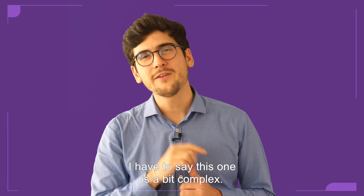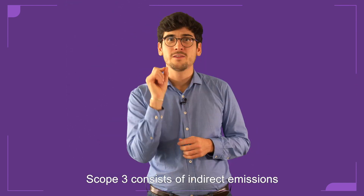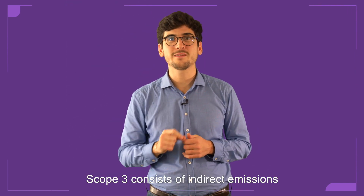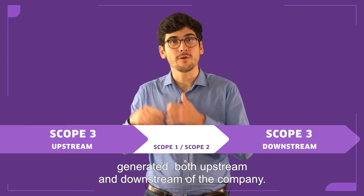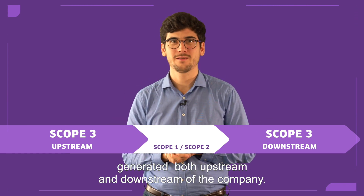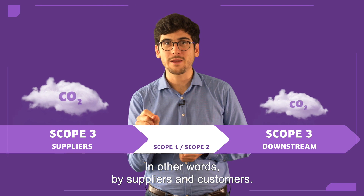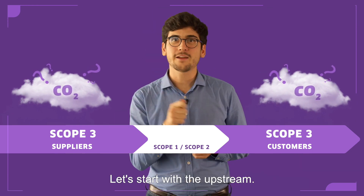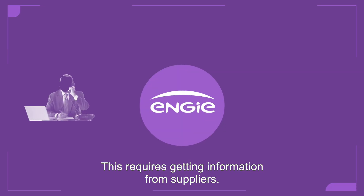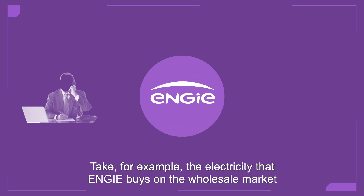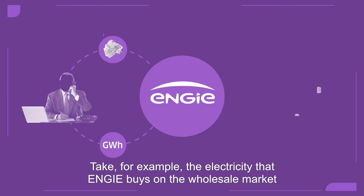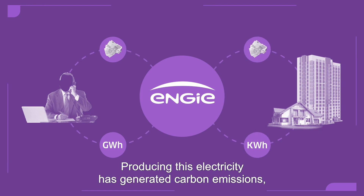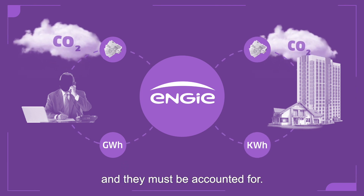Scope three is a bit complex. It consists of indirect emissions generated both upstream and downstream of the company — in other words, by its suppliers and customers. For the upstream side, this requires getting information from suppliers. Take for example the electricity that Engie buys on the wholesale market to resell to its customers — producing this electricity has generated carbon emissions, and they must be accounted for.